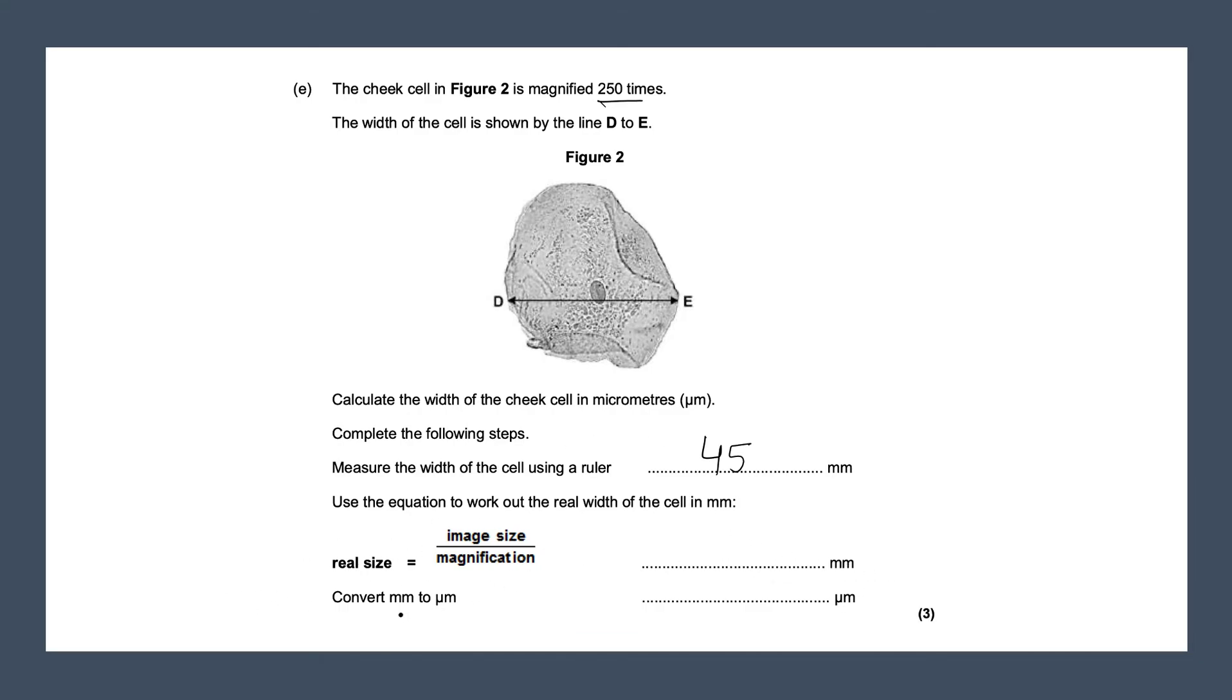So we're given the equation over here. Remember the magnifier is being magnified 250 times. So we would do our 45, the image size over here 45, and we would divide it by 250. And that would give us 0.18. Remember this is in millimeters and is being magnified 250 times. So our answer will be in millimeters as well. So it would be 0.18 millimeters. But then it's asking us to convert our millimeters answer to micrometers. And over here we just times it by a thousand. And we would get 180 micrometers. And those correct three answers would give you three marks.